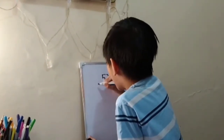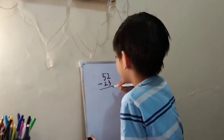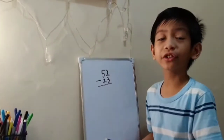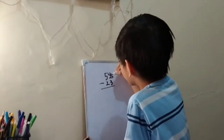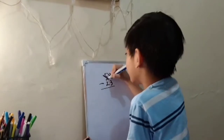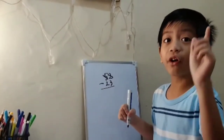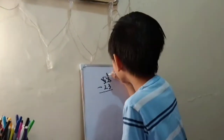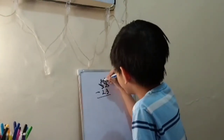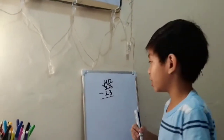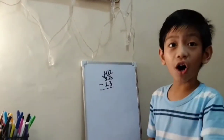52 minus 23. So, we're going to look at the 2 and 5. I will borrow 1 from 5. It's going to be 12. And 5 will become 4. 12 minus 3 is...